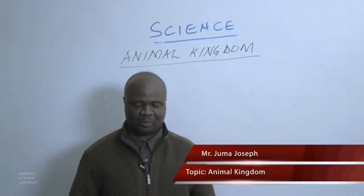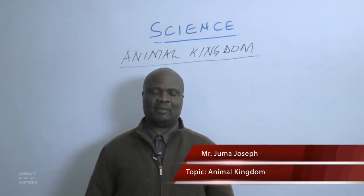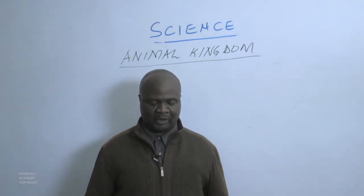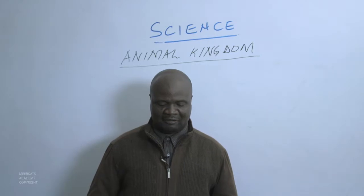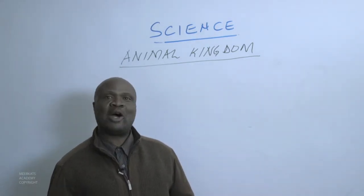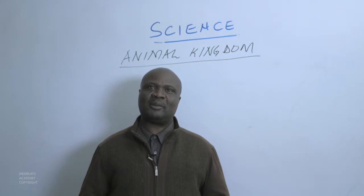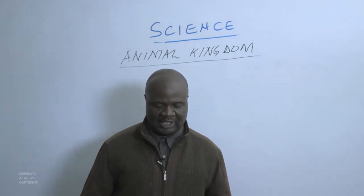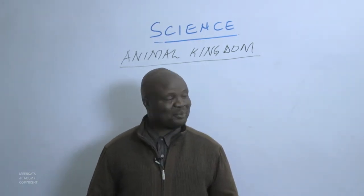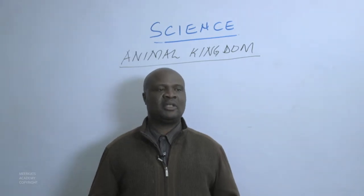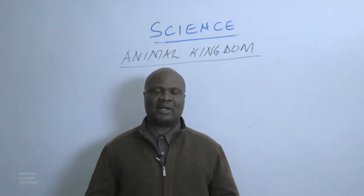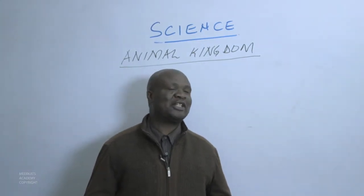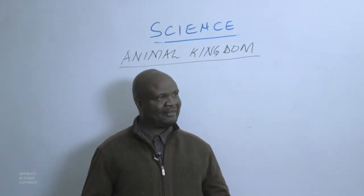Today's science lesson we are going to learn about the animal kingdom. When you talk about the animal kingdom, scientists have come up with close to 1.7 million species that they have been able to identify. There are many living organisms that do exist, and scientists have tried as much as possible to classify them.